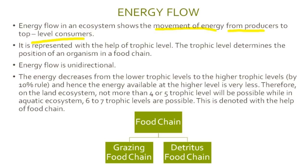This means that energy moves from the lowest trophic level in a food chain to the highest trophic level. That is, energy moves from plants or autotrophs or producers to primary consumers or heterotrophs such as deer or rabbit. From there, energy moves to secondary consumers such as wolf or snake, and then to the highest trophic level — tertiary consumers such as lion or vulture.